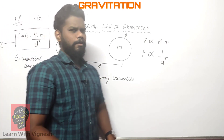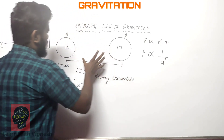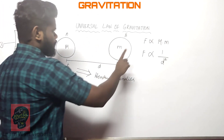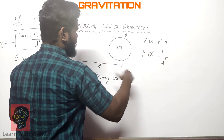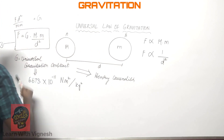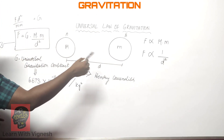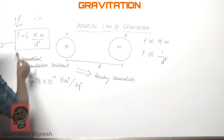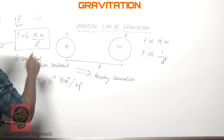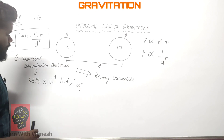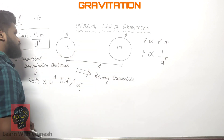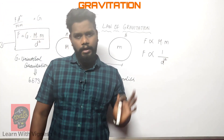According to universal law of gravitation, Newton says: every object in the universe attracts every other object. The force is directly proportional to mass and inversely proportional to the square of distance between them. The gravitational constant G — the universal gravitation constant — has value 6.673 × 10 to the power of minus 11 newton meter square per kg square. It was determined by Henry Cavendish.